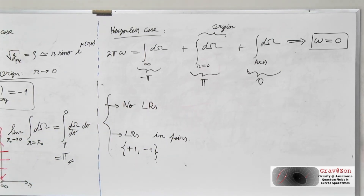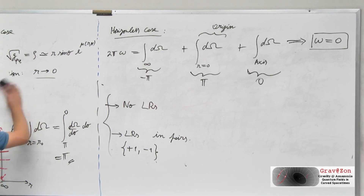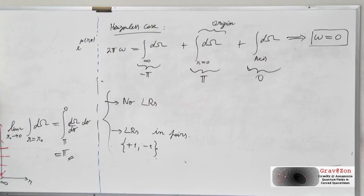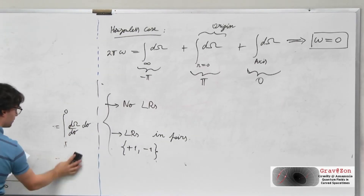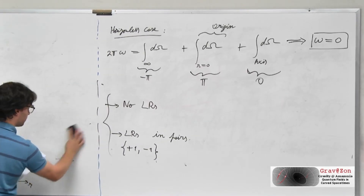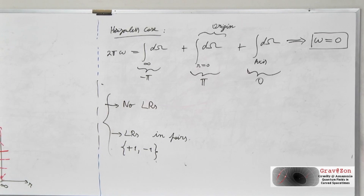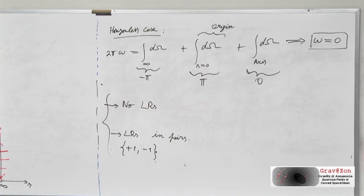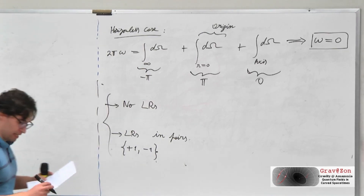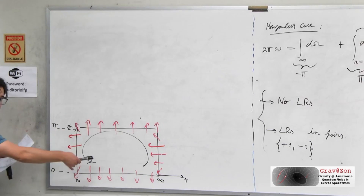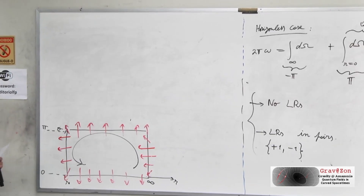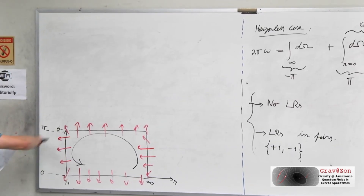That was for the horizonless case. What about the black hole case? Many things will be the same — the boundary conditions from infinity and the axis are unchanged — except we now replace the origin boundary condition with a horizon condition. That change of sign for V_R at the horizon changes everything.